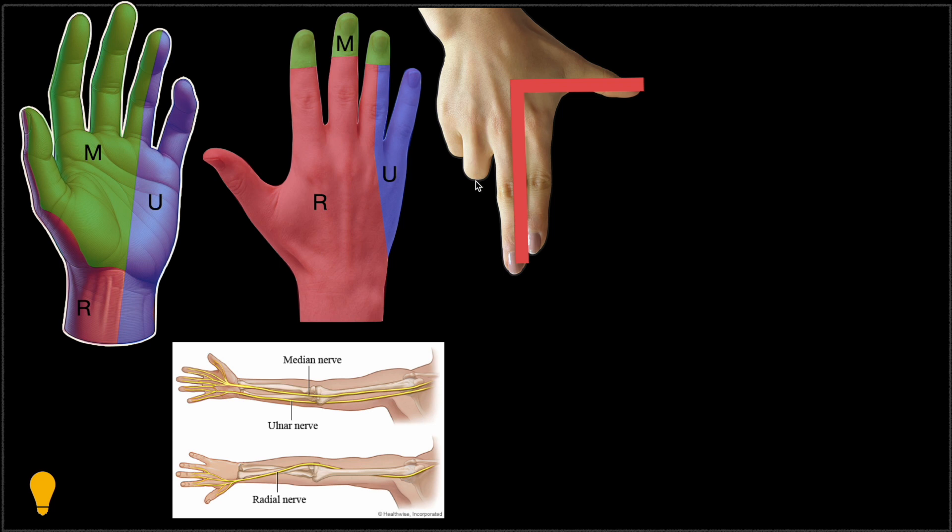So this part, and always remember the ring finger is divided. So this part, the dorsal part, is always innervated with the radial nerve.